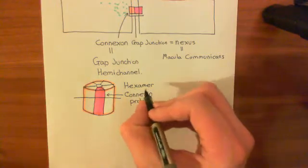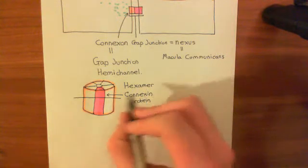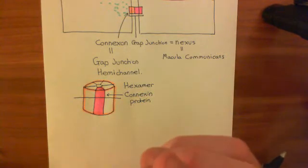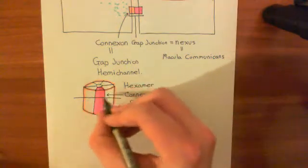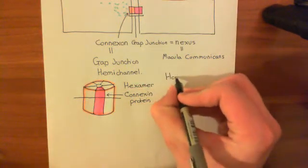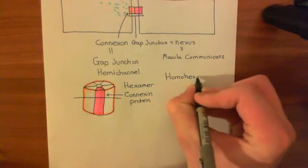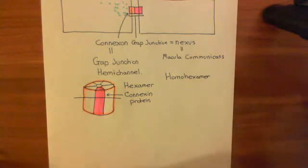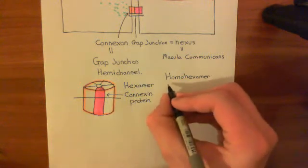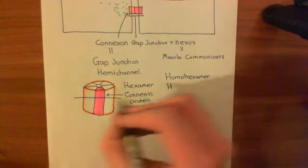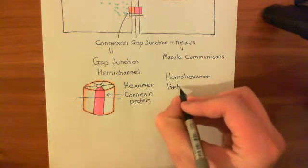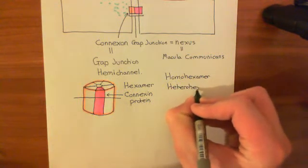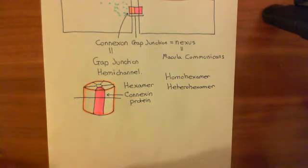You can either form hexamers which are made of the same connexin protein six times — you take one connexin gene, produce the associated protein six times, and put all six together to make what's known as a homohexamer, homo meaning same and hexamer meaning a six-membered structure. Or you can use different connexin proteins in the six different slots, and then what you get is a heterohexamer, meaning a different hexamer, because the connexin proteins used in the different slots are different.